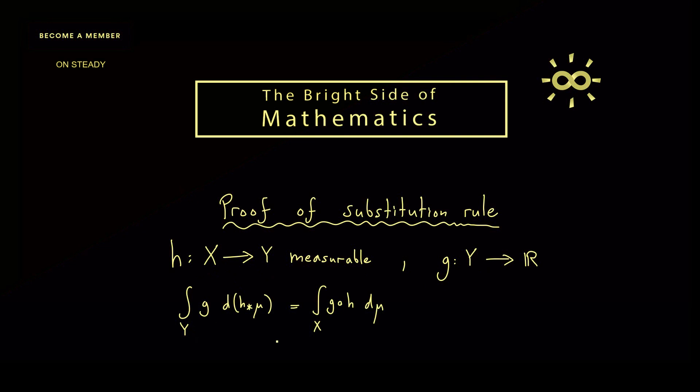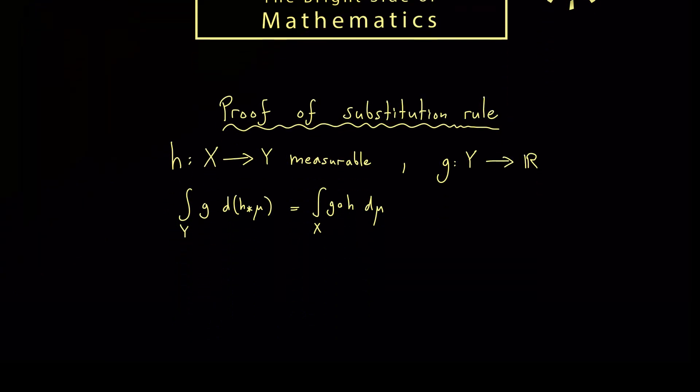It tells us that instead of calculating the integral of G, we can integrate the function G circle H over the measure space X. The formula always holds if you know that one of the two integrals here exists. And that's the whole thing we want to prove now.